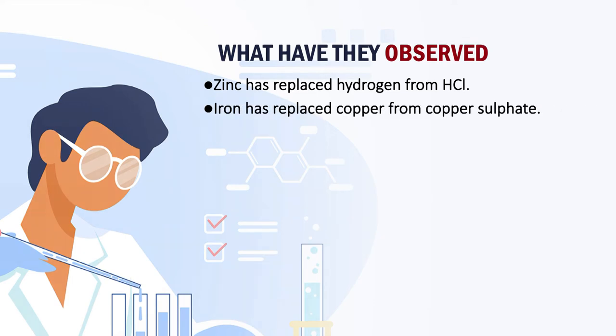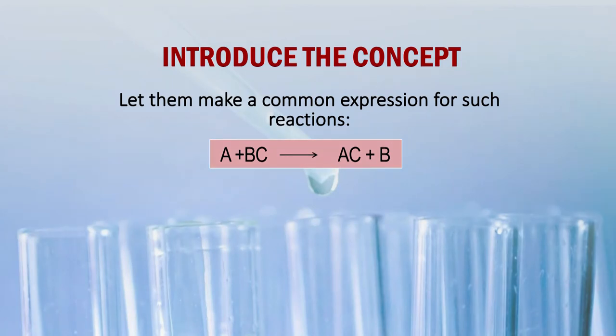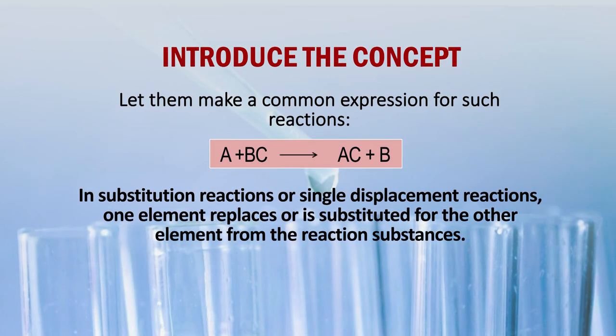In equation 2 iron has replaced copper; in equation 3 zinc has replaced copper in the output. So when one element is replacing another — zinc replaced hydrogen from HCl, iron replaced copper from copper sulphate, zinc replaced copper from copper sulphate — they can write a common expression like A + BC = AC + B. Here you introduce that in substitution or single displacement reactions, one element replaces or is substituted by another element. It is called single displacement because only one element is being replaced.